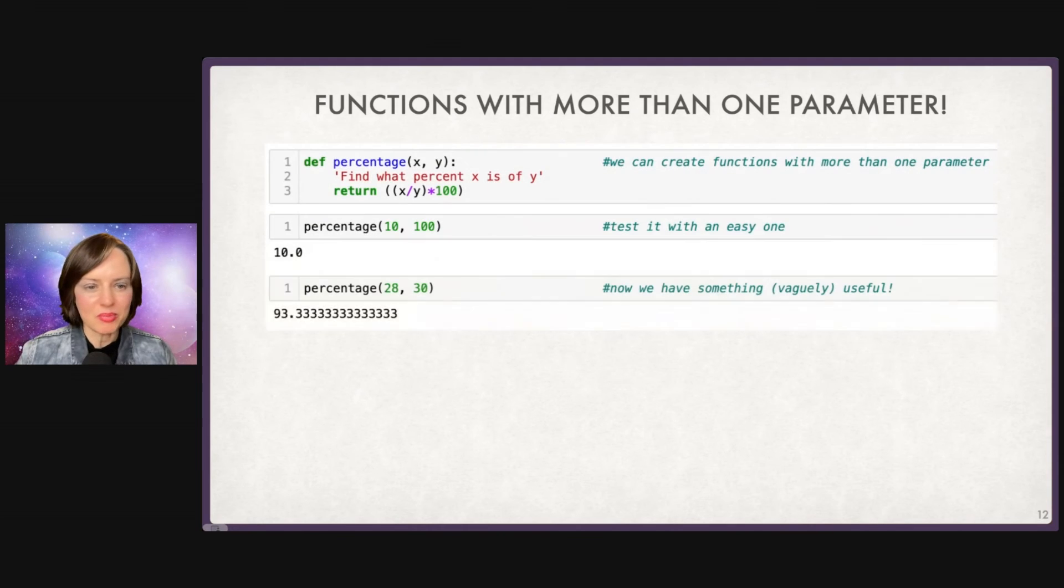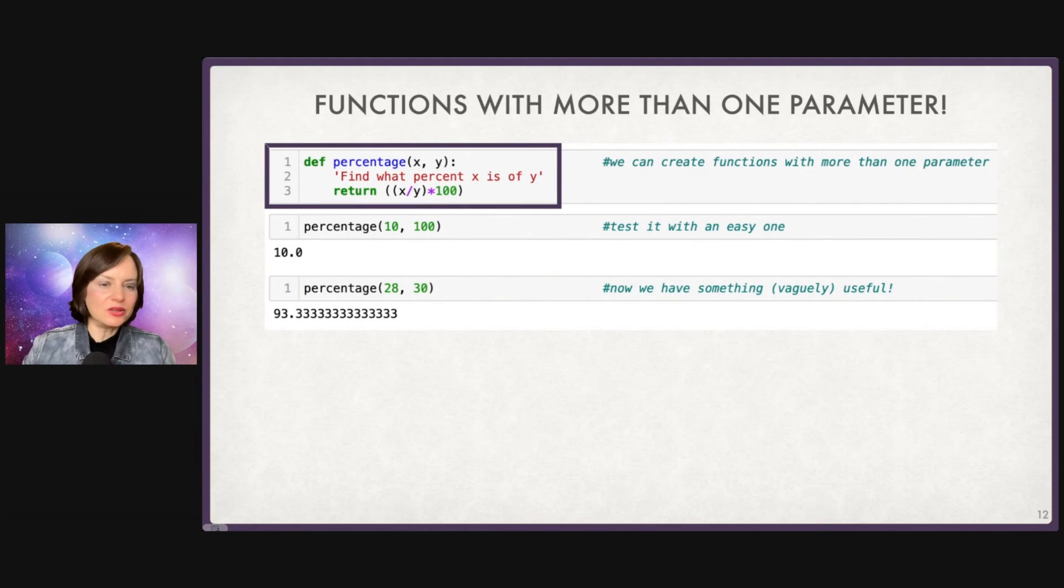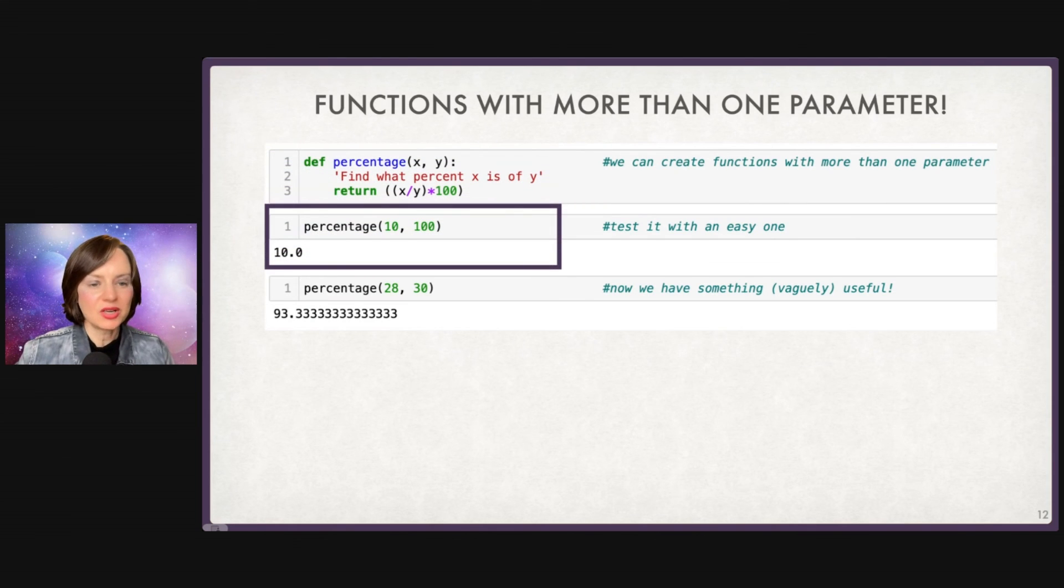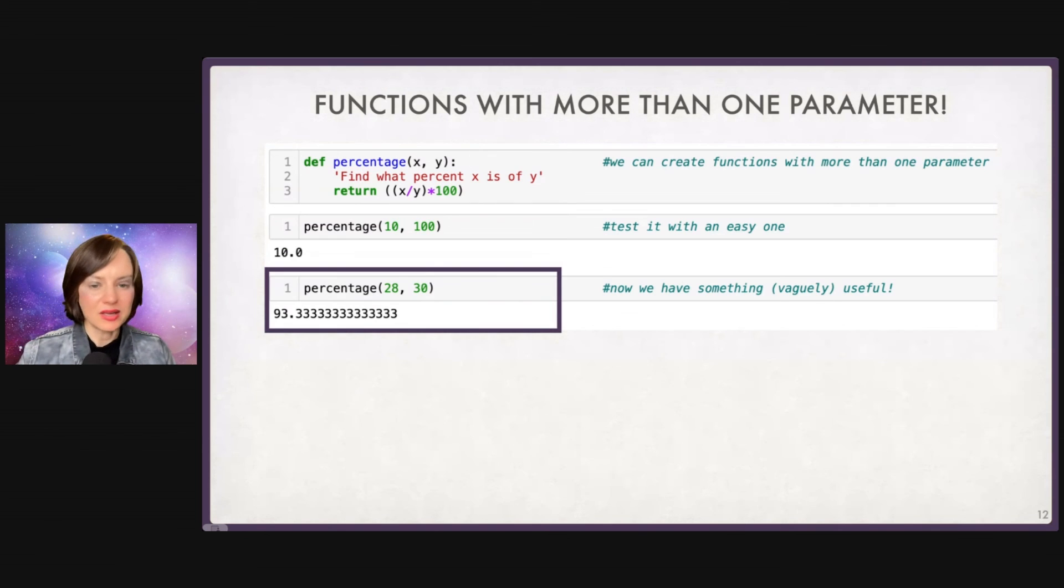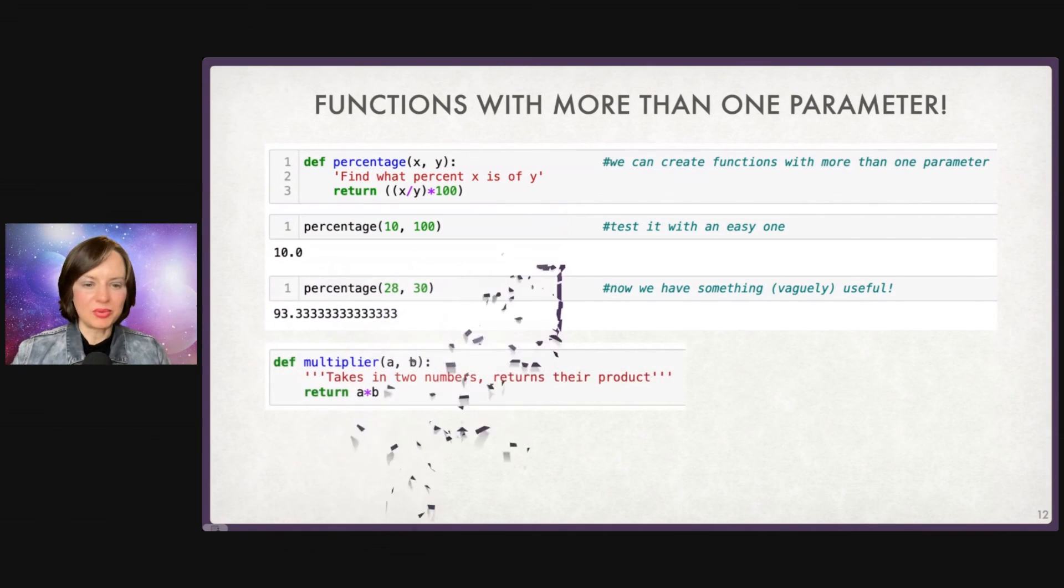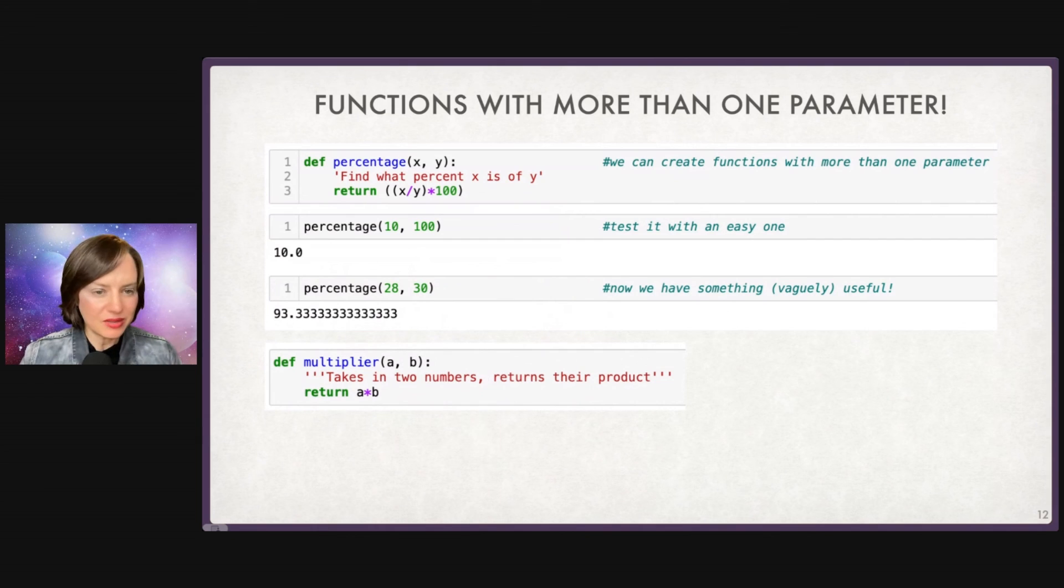Finally, I want to talk about functions with more than one parameter. So we can include with our parameter more than just X. We could say X comma Y. So in this case, we have define a function called percentage, X comma Y, which is going to find what percent X is of Y. And I'm going to return X divided by Y times 100. So I am indeed going to calculate a percentage. So I can now write in things like percentage, 10 comma 100 is 10. Percentage 28 out of 30 is 93. And one more example for extra good luck.